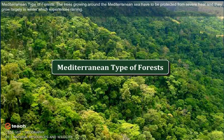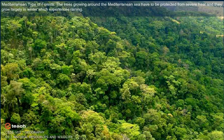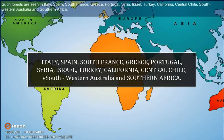Mediterranean Type of Forest. The trees growing around the Mediterranean Sea have to be protected from severe heat and they grow largely in winter, which experiences rainfall. Such forests are seen in Italy, Spain, South France, Greece, Portugal, Syria, Israel, Turkey, California, Central Chile, southwestern Australia and southern Africa.